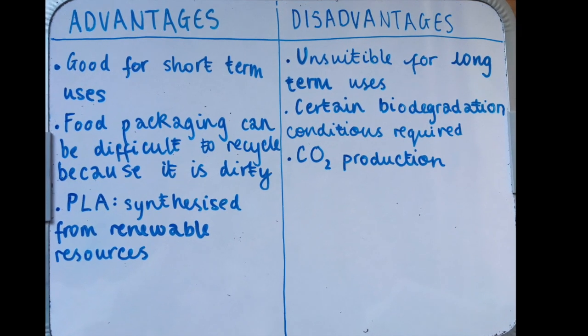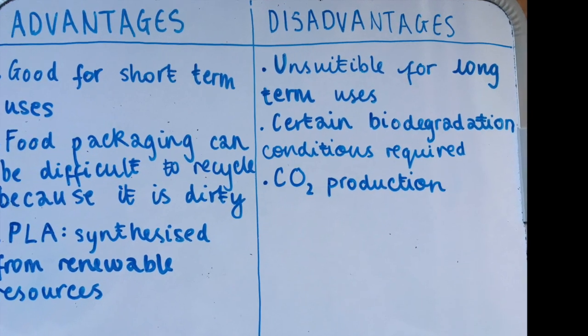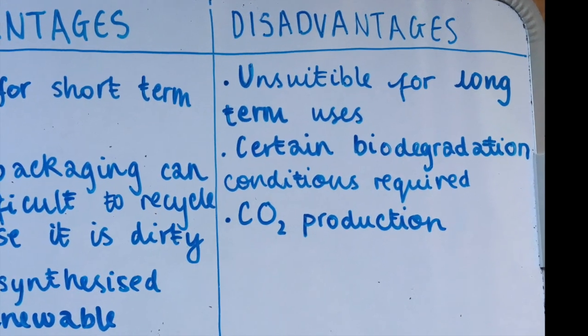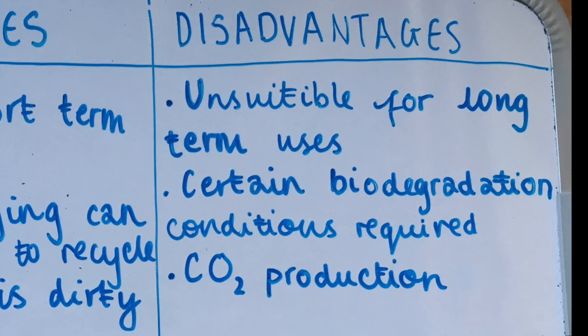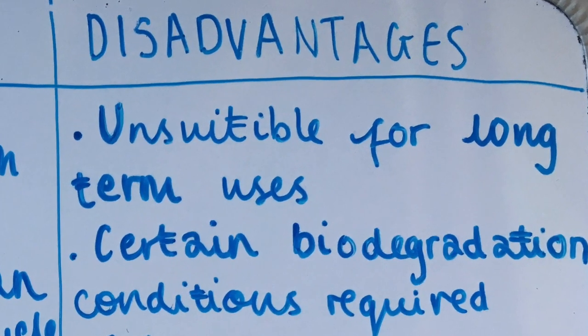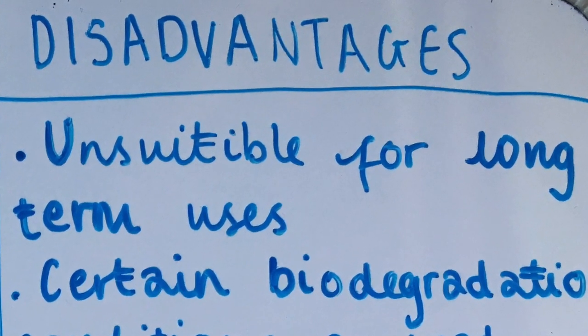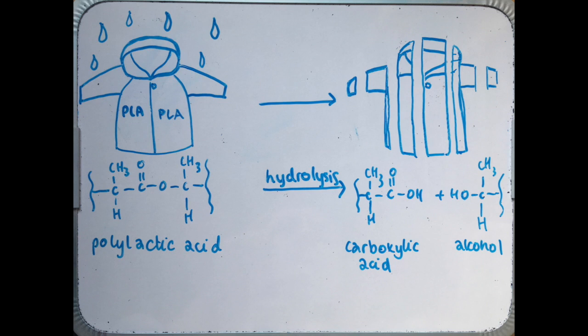One outstanding disadvantage that means biodegradable polymers will not be suitable to replace all current plastics is that they are not suitable for long-term uses such as durable clothing, as the reactive groups in the backbone of the polymer will eventually react and break down the item.